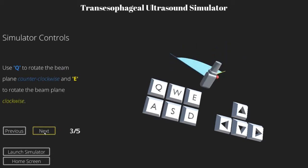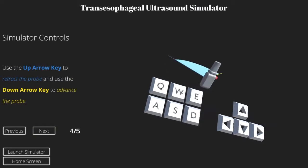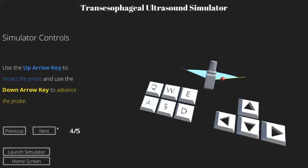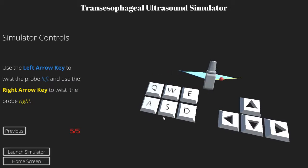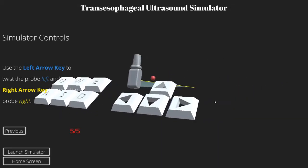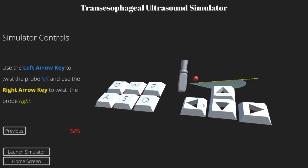Q and E to rotate that beam. Up arrow and down arrow to retreat and advance that probe. And left arrow and right arrow to actually simulate what it's like to twist the probe while you're doing an exam. The buttons react dynamically, or the animation reacts dynamically. So we'll launch this simulator.